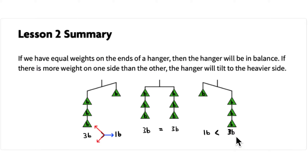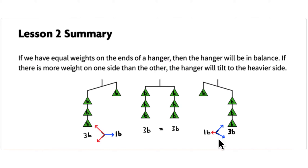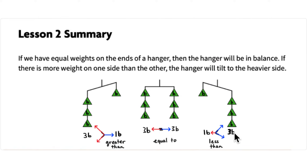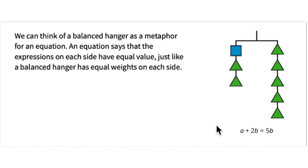Notice the less than symbol opens toward the greater amount — three B in this case — and points to the lesser amount, one B. Read left to right: one B is less than three B. So we have greater than, equal to, and less than. Now we can move toward equations, using the hanger to visualize what's going on.